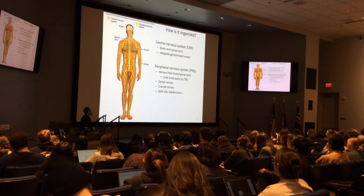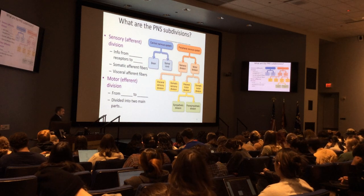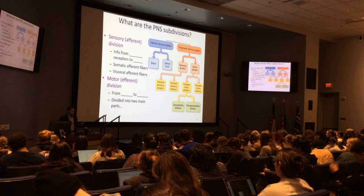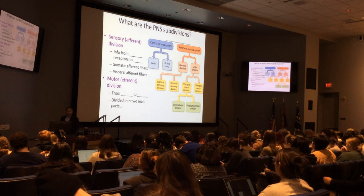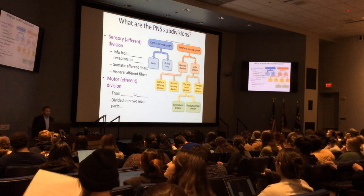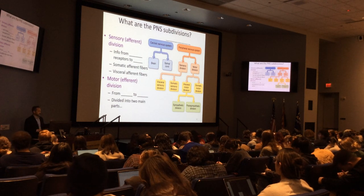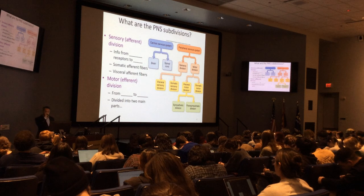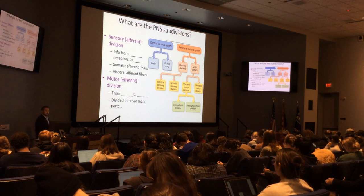We subdivide the peripheral nervous system into sensory and motor. Sensory is afferent — I emphasize the A so I remember it. Motor is efferent with an E. The sensory afferent gets information from sensory receptors to the central nervous system. We refer to these as somatic afferent fibers or visceral afferent fibers. Somatic refers to skin, skeletal muscle, and joints. Visceral is from internal organs of the viscera — abdominal and thoracic cavities.